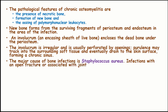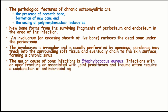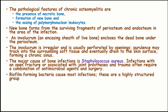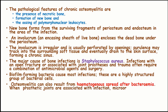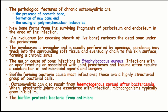The major cause of bone infection is Staphylococcus aureus. Infection with an open fracture or associated with joint prosthesis and trauma often requires a combination of antimicrobial agents and surgery. Biofilm-forming bacteria cause most infections, and these are a highly structured group of bacterial cells. Osteomyelitis can result from hematogenous spread after bacteremia; where prosthetic joints are associated with infection, microorganisms typically grow in a biofilm. This biofilm protects the bacteria from antimicrobial treatment as well as the host's immune response.